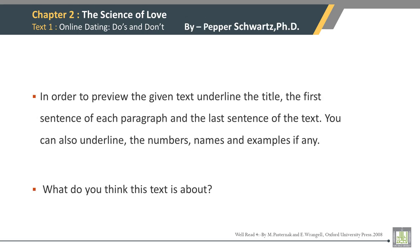Text 1: Online Dating Do's and Don'ts by Paper Shorts. In order to preview the given text, underline the title, the first sentence of each paragraph, and the last sentence of the text. You can also underline numbers, names, and examples if any.